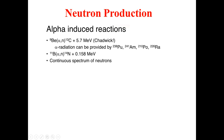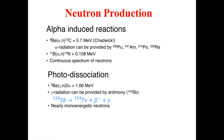The second type of alpha-induced reaction involves boron-11. When you bombard boron-11 with alpha particles, we get neutrons along with nitrogen-14, plus 0.158 MeV of energy. During these reactions, we can also get a continuous spectrum of neutrons.